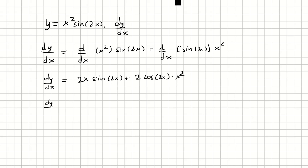So you have dy over dx is equal to 2x sine 2x, plus 2x squared cosine 2x.